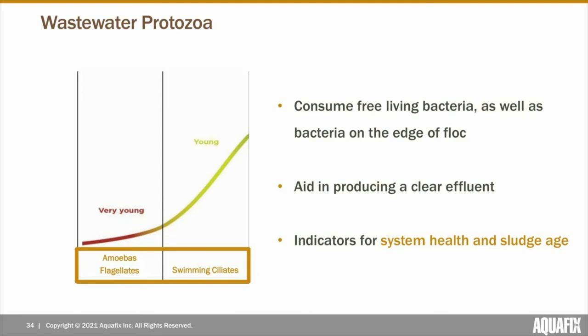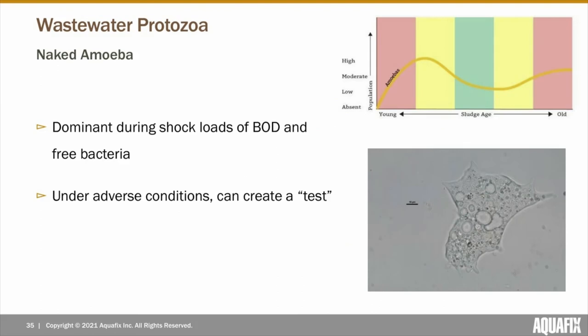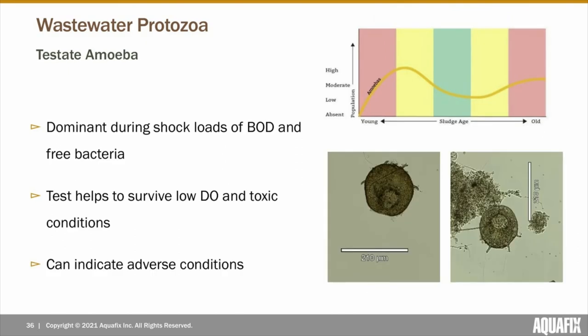Naked amoebas are protozoa that produce waves of cytoplasmic movement as their gut contents flow — referred to as pseudopodia or false feet movement. They use their pseudopodia to surround and capture their food. Naked amoebas are most dominant in a younger sludge age due to the high concentration of free bacteria. Under adverse conditions, naked amoebas have the ability to create a calcified shell or test, at which point they're referred to as testate amoebas. The test helps protect them in the presence of low dissolved oxygen or other adverse conditions like mild toxicity, so their presence can indicate adverse conditions.